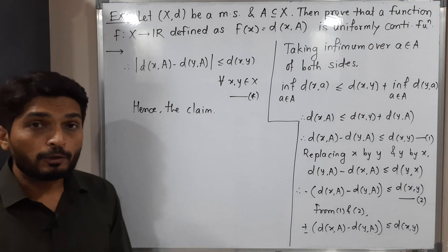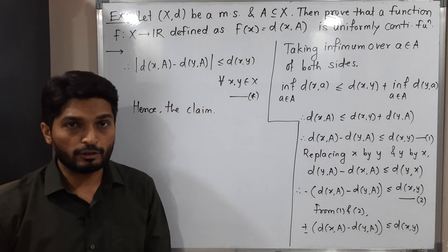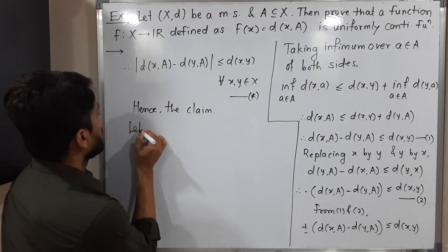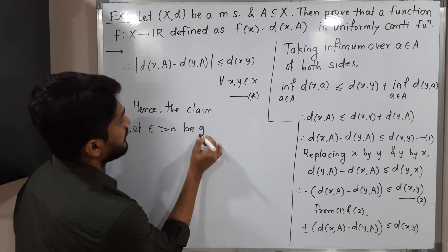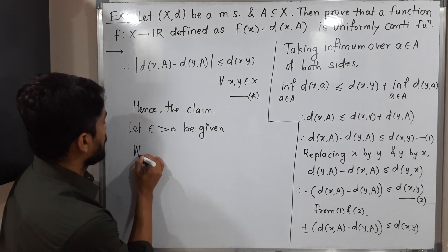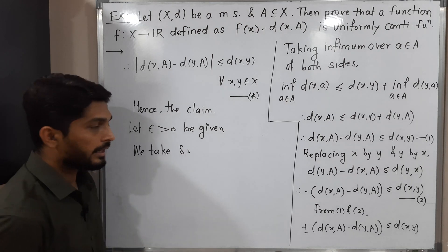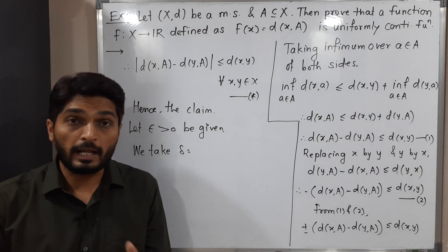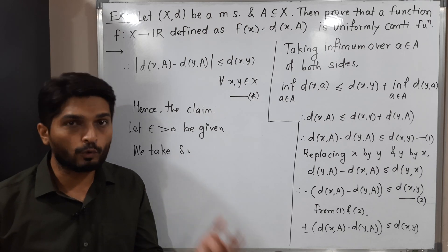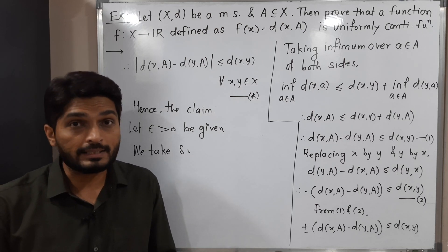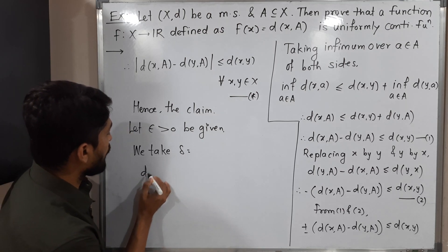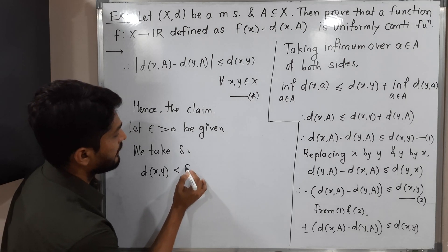Using this claim, I am going to prove that the given function f is uniformly continuous using the epsilon-delta definition. Let ε > 0 be given. For this epsilon we have to choose our delta. Right now we don't know what delta should be, so I am keeping it blank. We will go further and after a few steps we will realize what delta should be. So: d(x,y) < δ implies...